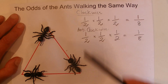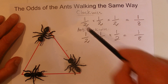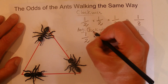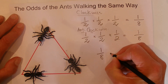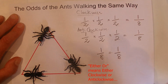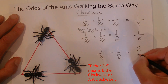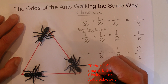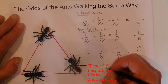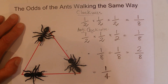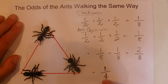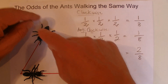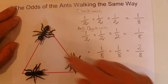So it's a one in eight chance of them all moving clockwise, and a one in eight chance of them all moving anti-clockwise. So the odds of the ants walking the same way is one in eight plus one in eight, because it's either or — that equals two chances in eight, which can be simplified as one chance in four. So there's a one in four chance that these ants will walk the same way, either clockwise or anti-clockwise.